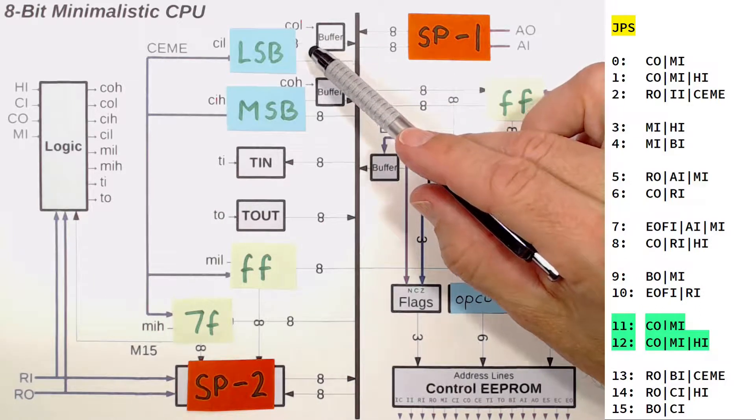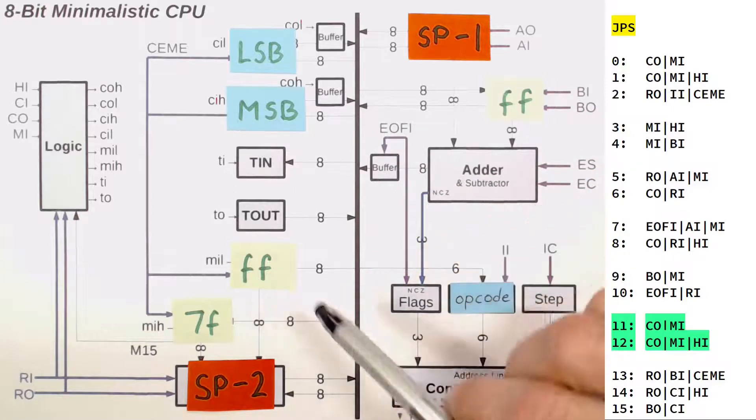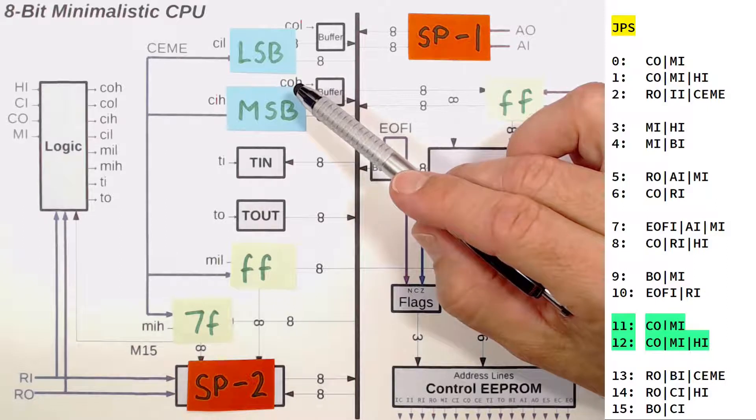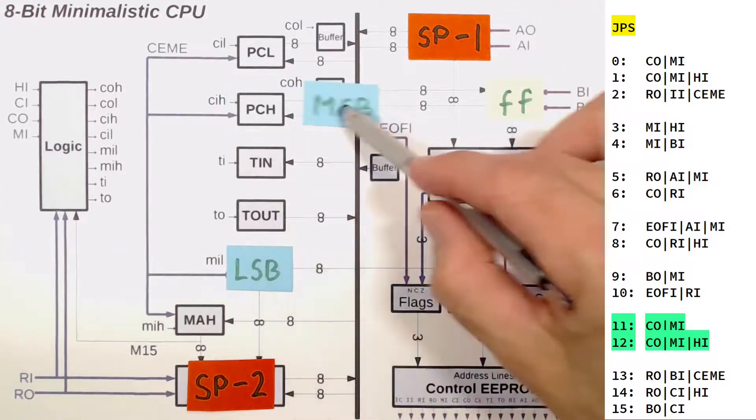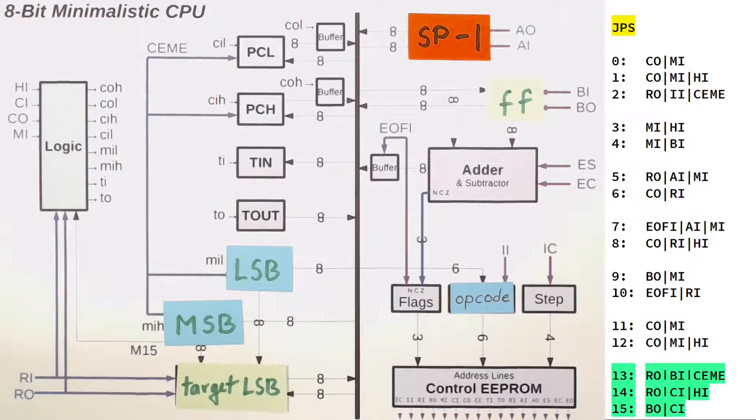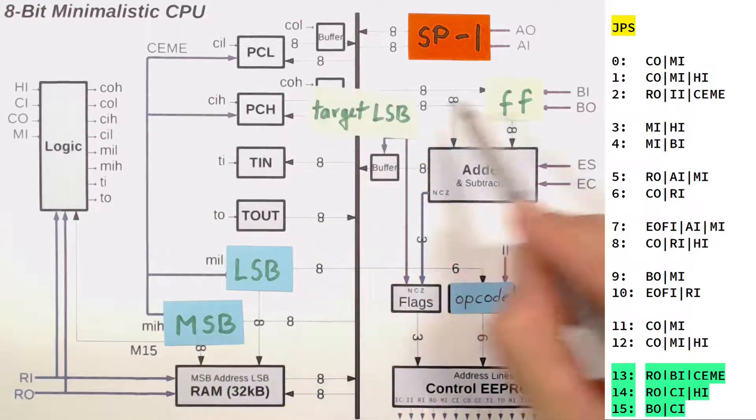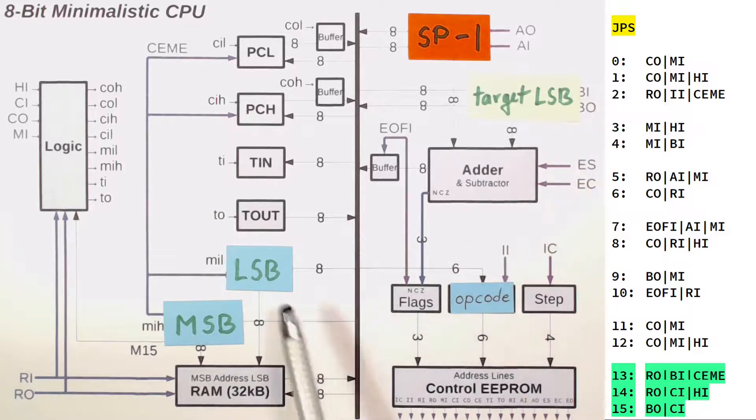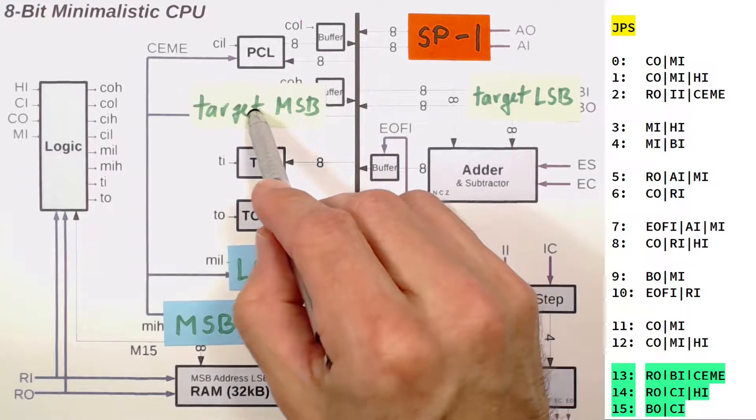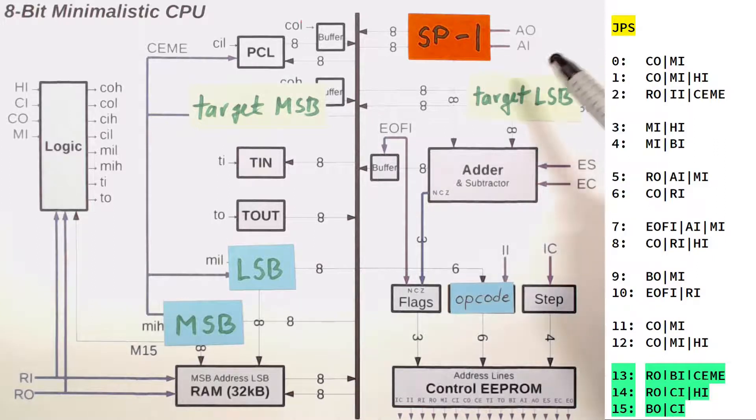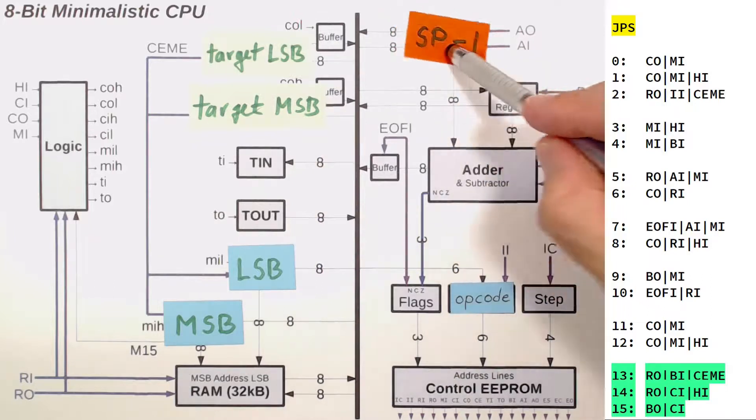Now COUNTER OUT MEMORY IN and COUNTER OUT MEMORY IN HIGH just copies the program counter, which is still holding the LSB and MSB of our target subroutine address, into our MAR. Now the LSB of our target subroutine address is exposed here. RAM OUT BE IN COUNT ENABLE moves that address temporarily into B and increments the MAR, so that now our target MSB gets exposed. RAM OUT COUNTER IN HIGH moves that MSB up into the program counter. And our last step is to move our target LSB into the program counter as well. And we are done.